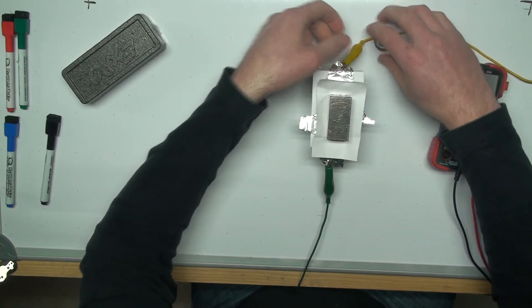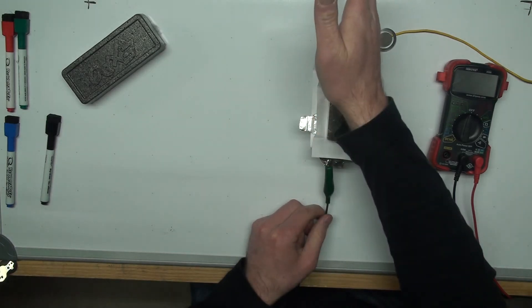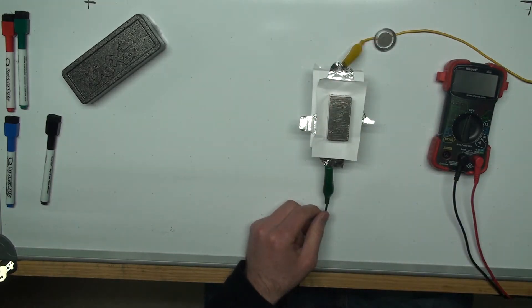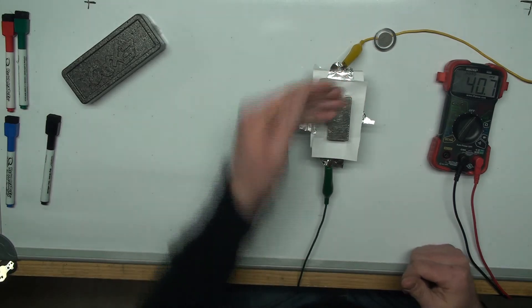But the actual electrons are traveling this way. So turn on my power supply. So we have current now traveling this way.